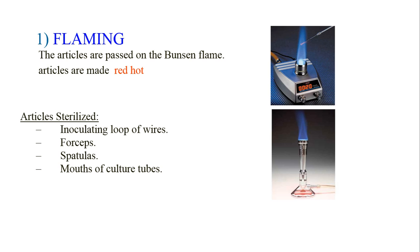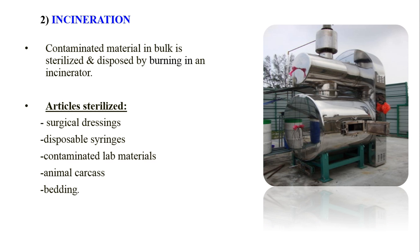One important dry heat mechanism is flaming. We use flames regularly in the lab using Bunsen burners, which turn materials red hot or burn them completely. This method is used for sterilizing inoculation loops, wire loops, forceps, spatulas, mouth of culture tubes, and similar items.